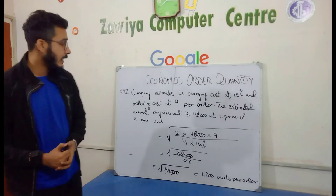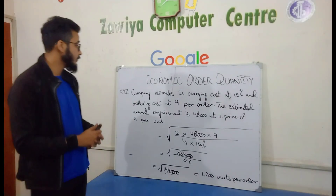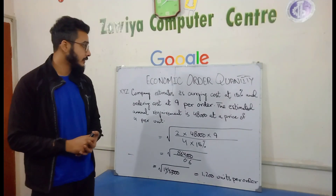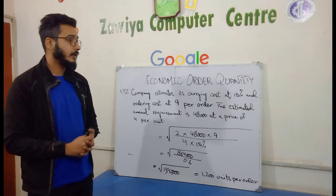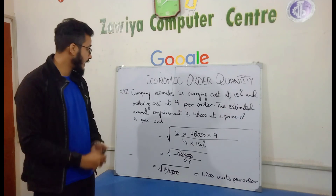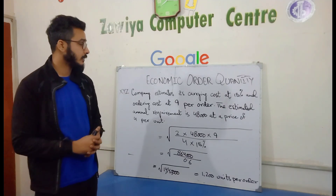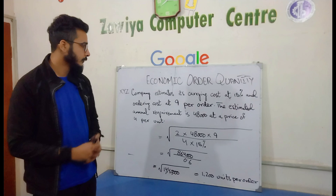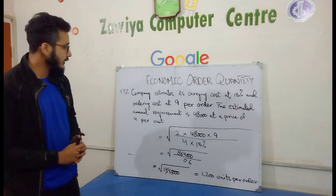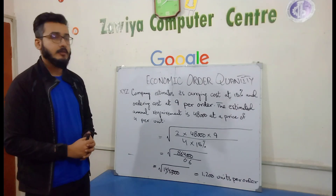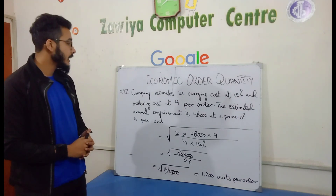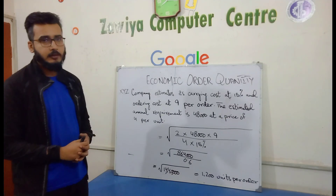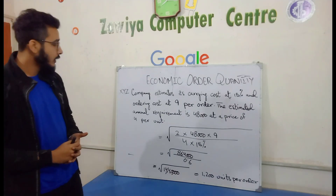Here we have a question: XYZ Company has an estimated carrying cost of 15% and ordering cost of 9 per order. The estimated annual requirement is 48,000 units at a price of 4 per unit.